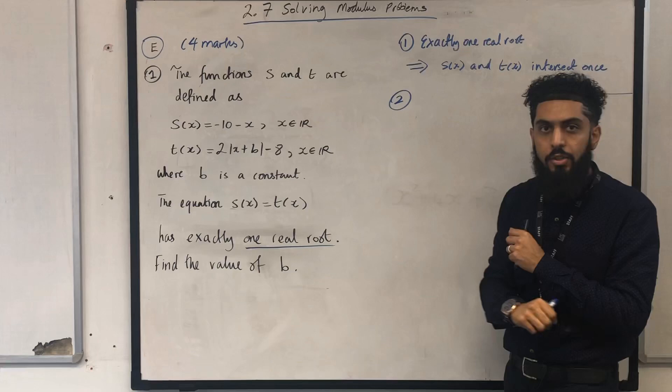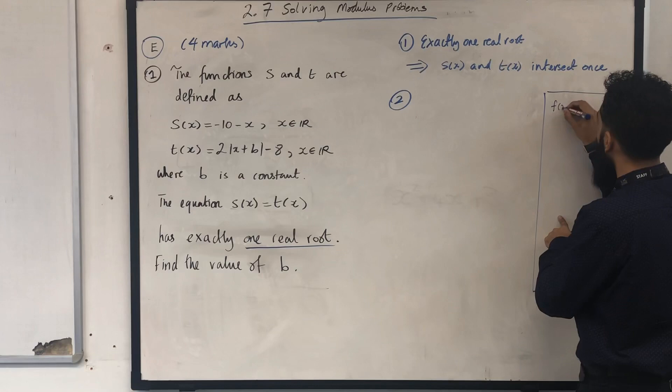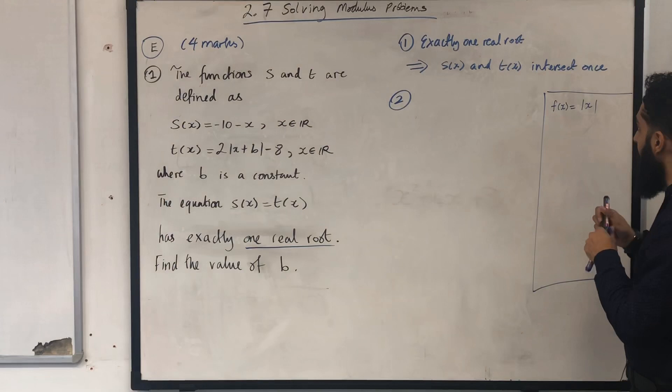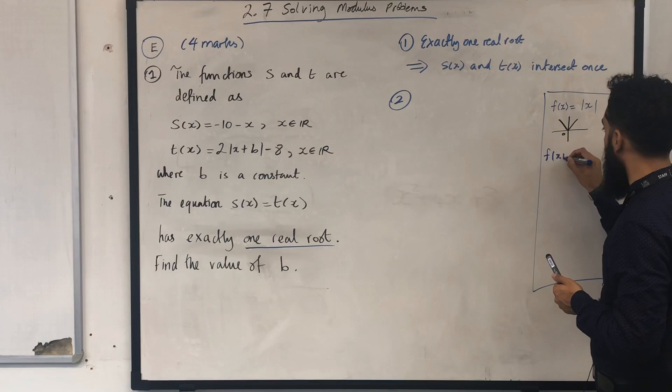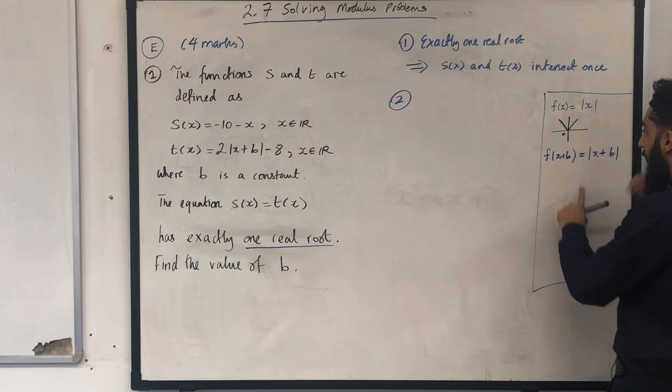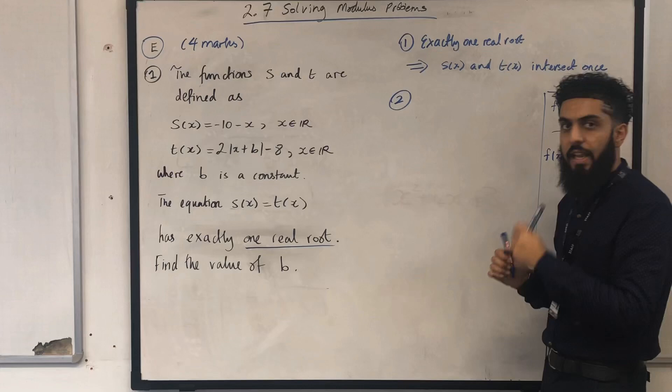I'm going to let f of x equal modulus of x. I know what the graph of modulus of x looks like. Then I want to apply a transformation: f of x plus b, which is just modulus of x plus b. What happens is you take the modulus of x graph and shift it b units to the left, obtaining the following graph.